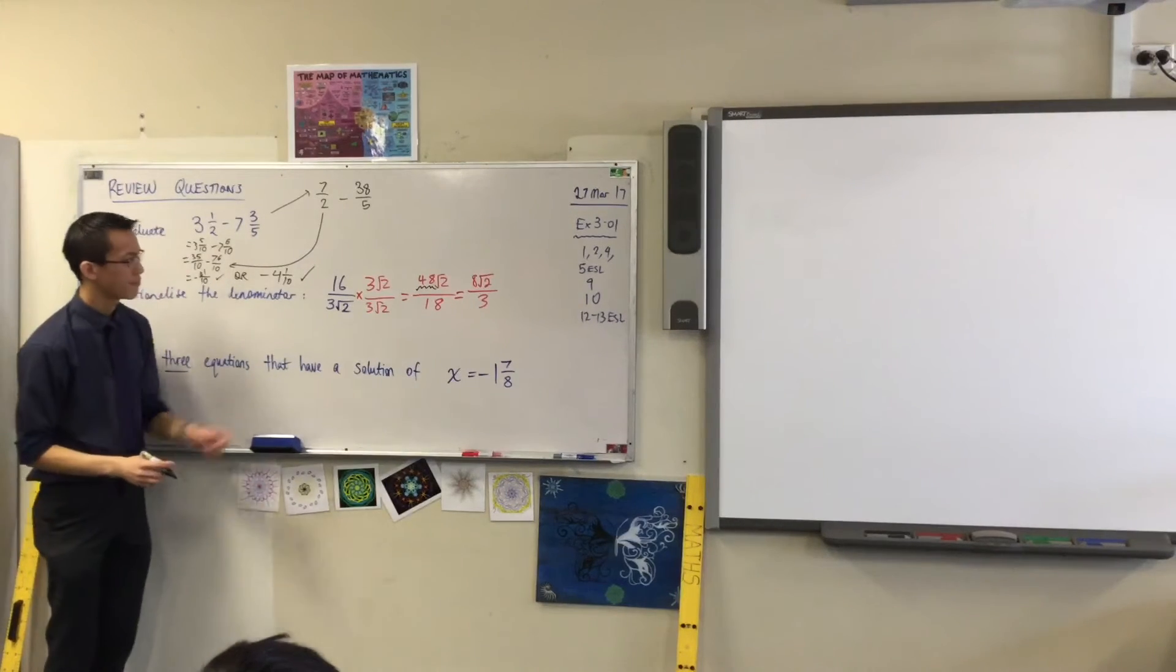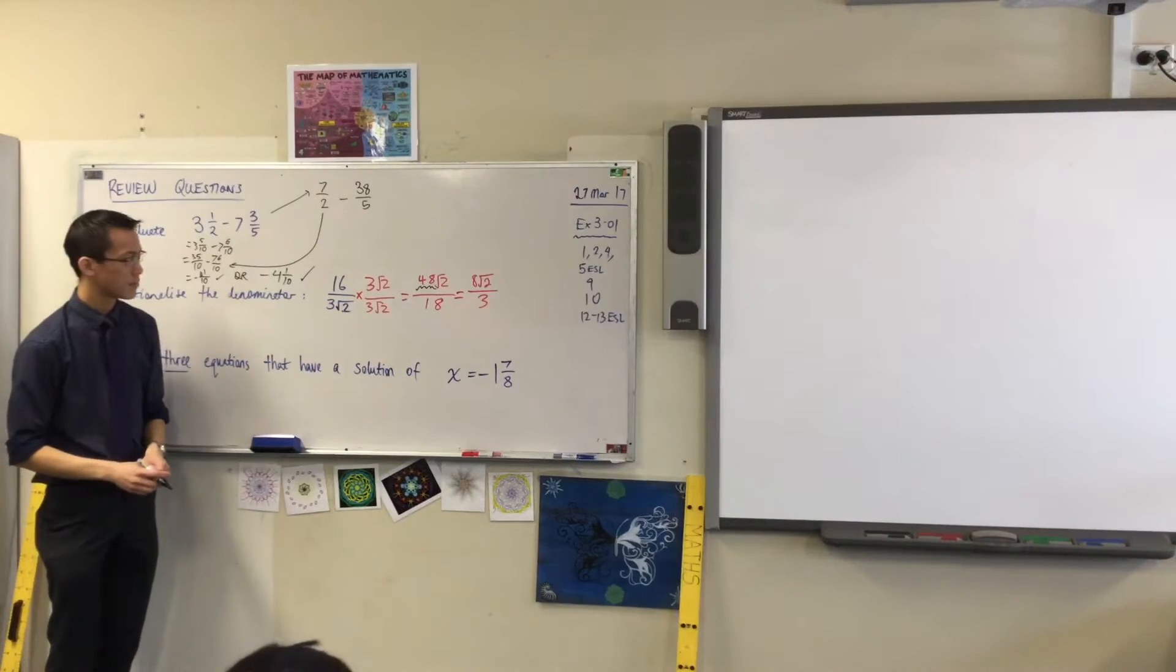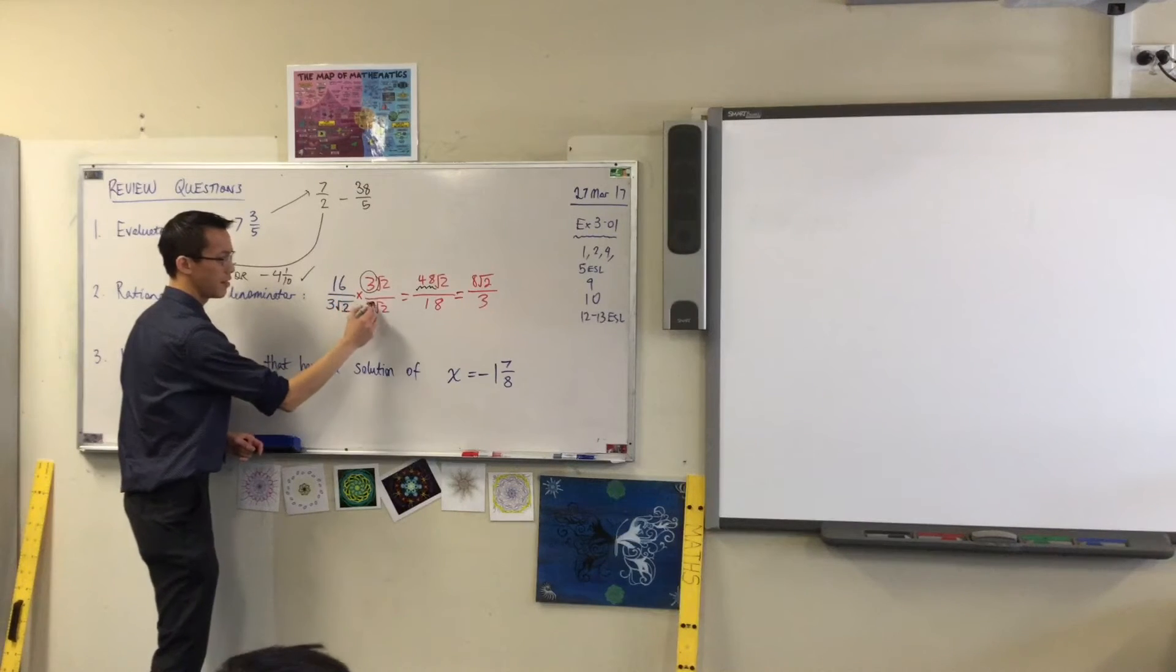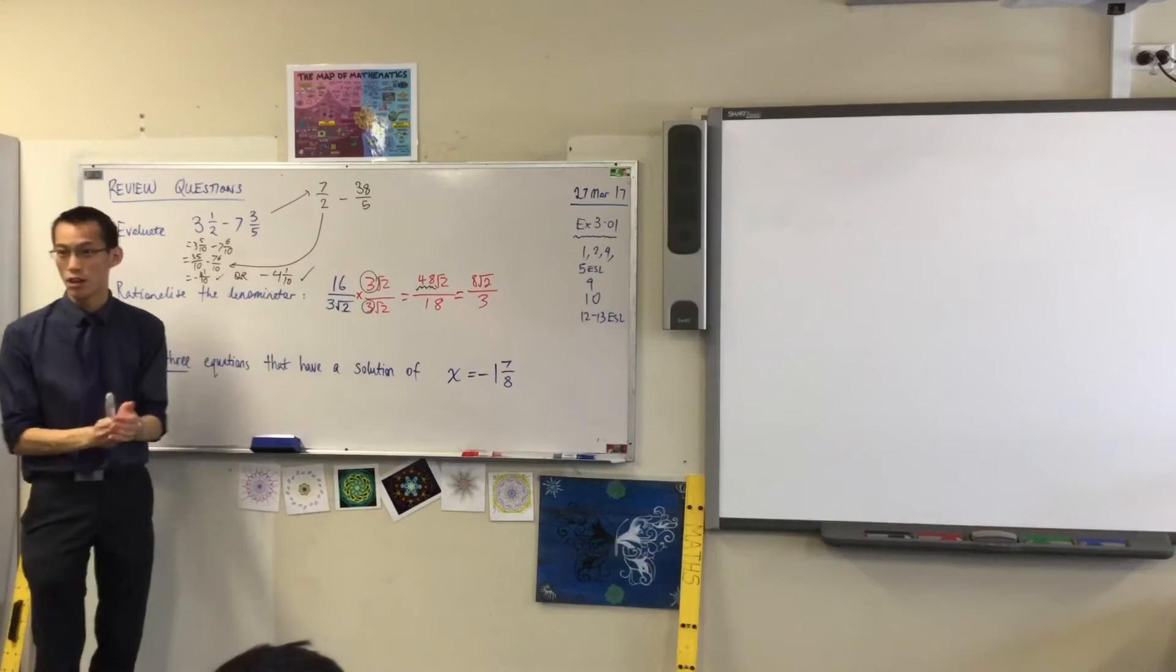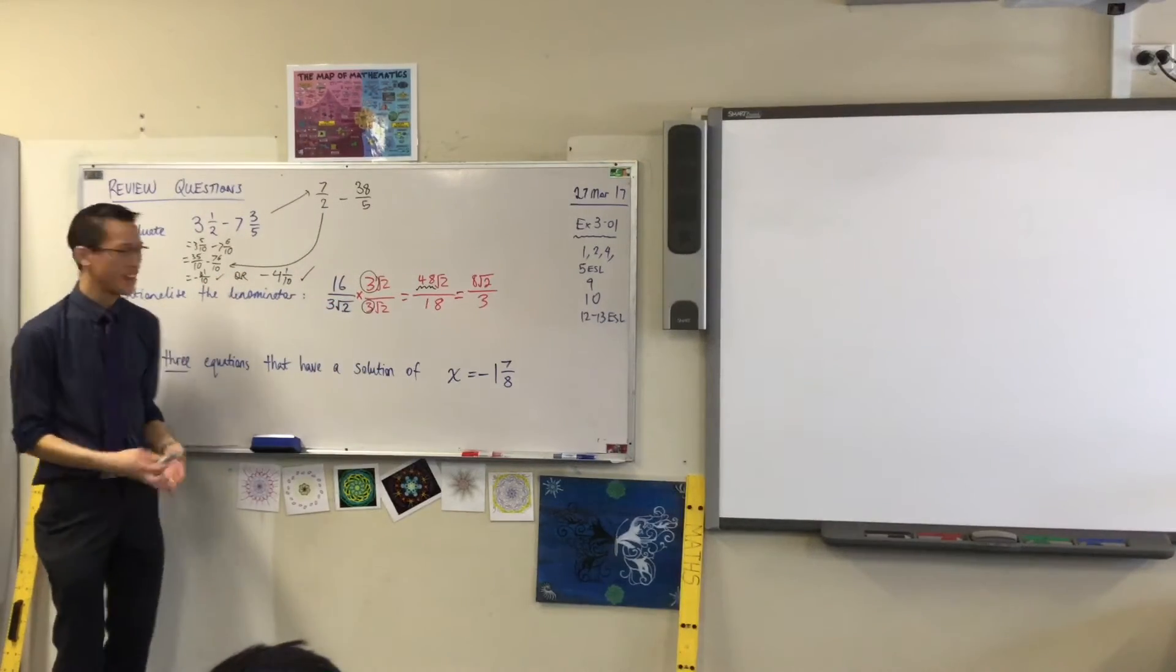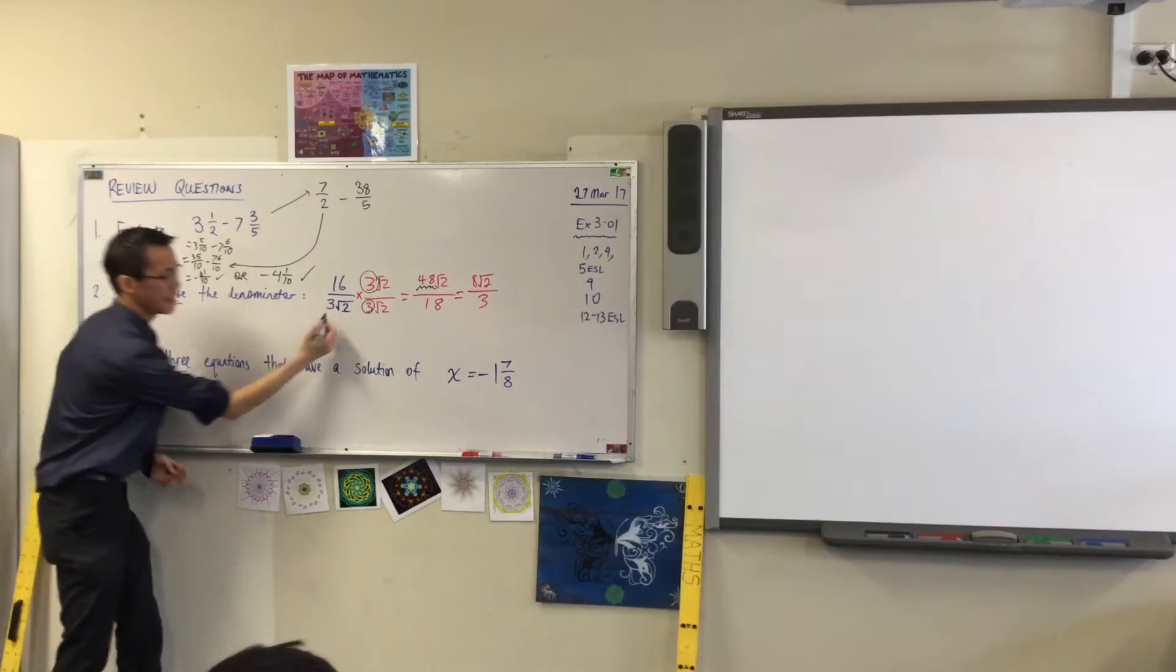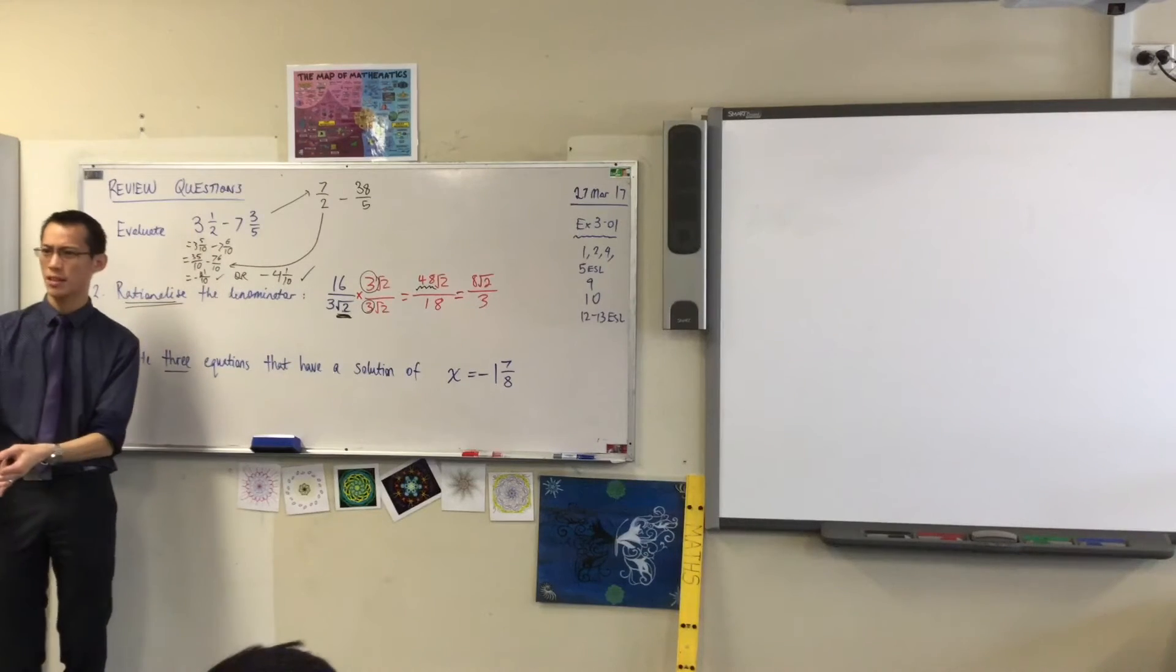Instead of putting times 3 root over 3 root 2. Yeah. Yeah. Okay. So see this guy here and this guy here. They're not wrong. He's got it on the top and bottom. So everything will be fine. It will be accurate, but it's not necessary, right? If we're trying to rationalize, then the issue is the irrational part down there. It's just the root 2. Does that make sense? Yeah.